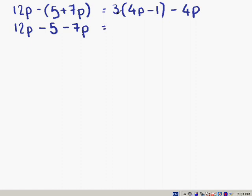That's equal to 3 times 4p is 12p, and 3 times minus 1 is minus 3. And we still have our minus 4p on the end.